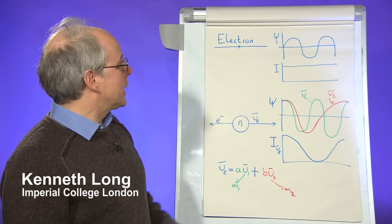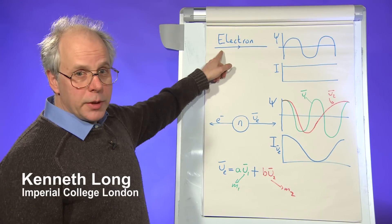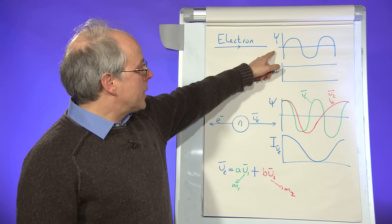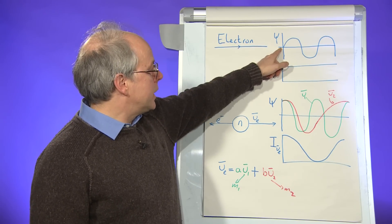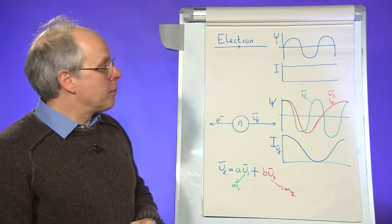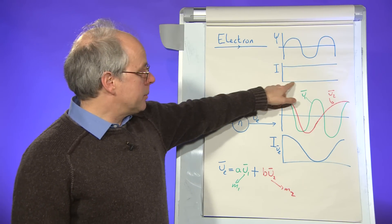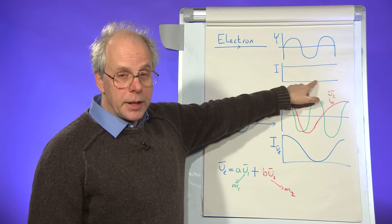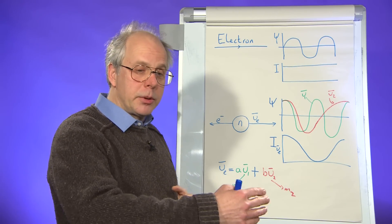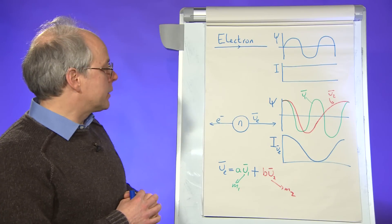To explain that, let's start with the electron. If I have an electron moving through space with a particular momentum, I can describe that with a matter wave, and that's shown here. The wavelength of that wave depends on the electron's mass. The chance that I find it somewhere along its trajectory is proportional to the intensity of the wave, and as you see, that's flat, so it's equally probable to find it anywhere along its trajectory.